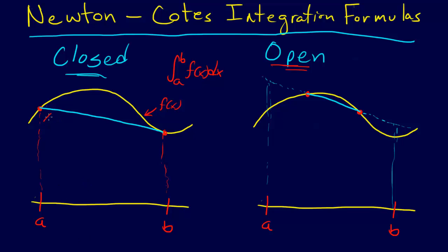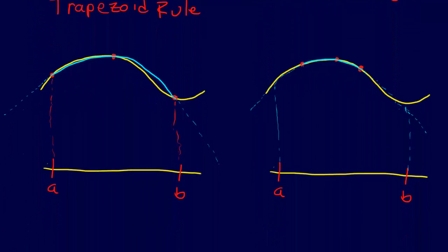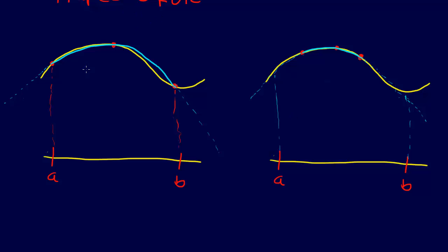This formula here, where we find the integral of this trapezoid - you can see that it forms a trapezoid - we call this the trapezoid rule. We'll derive these a little bit later, or at least show a little bit more detail there.